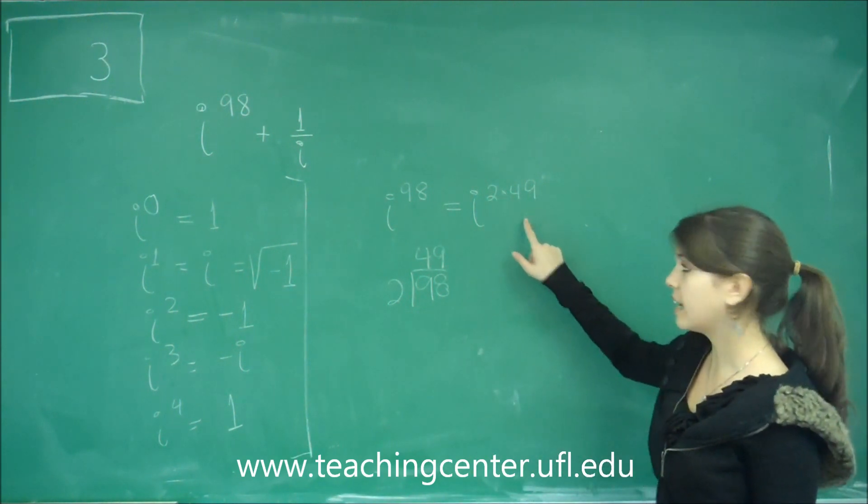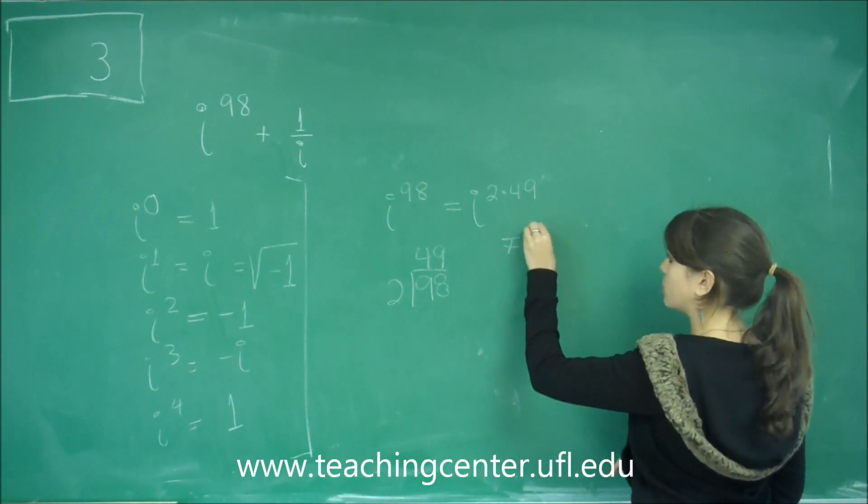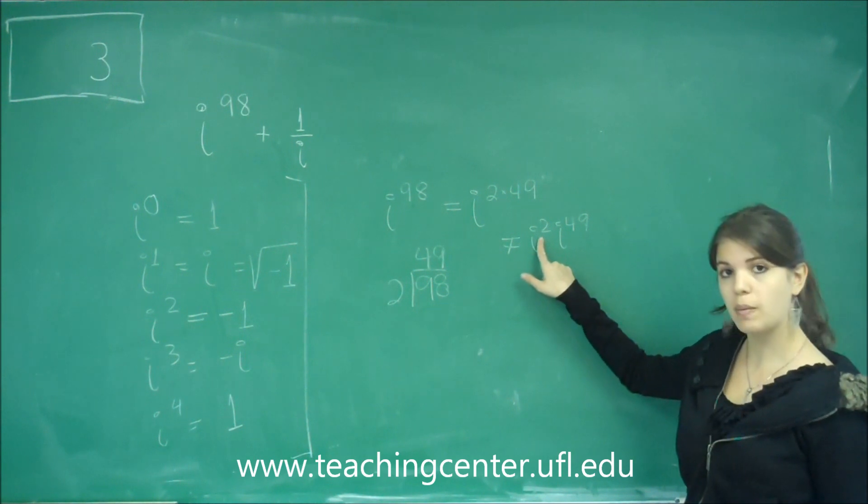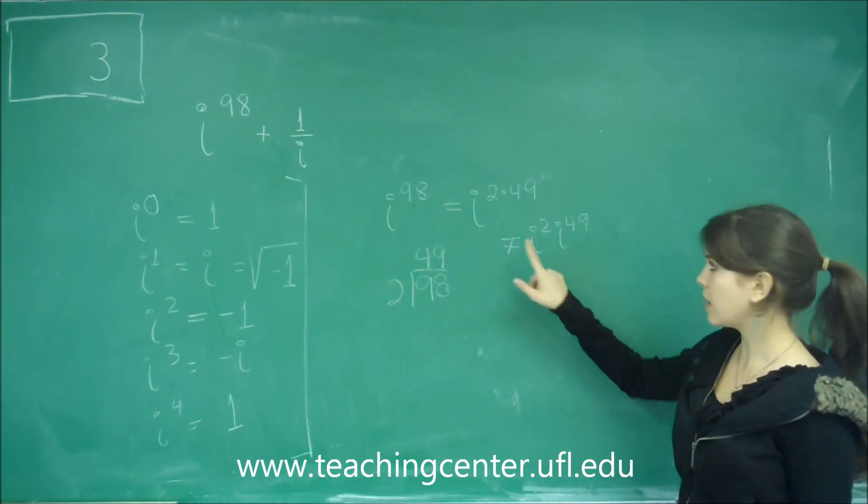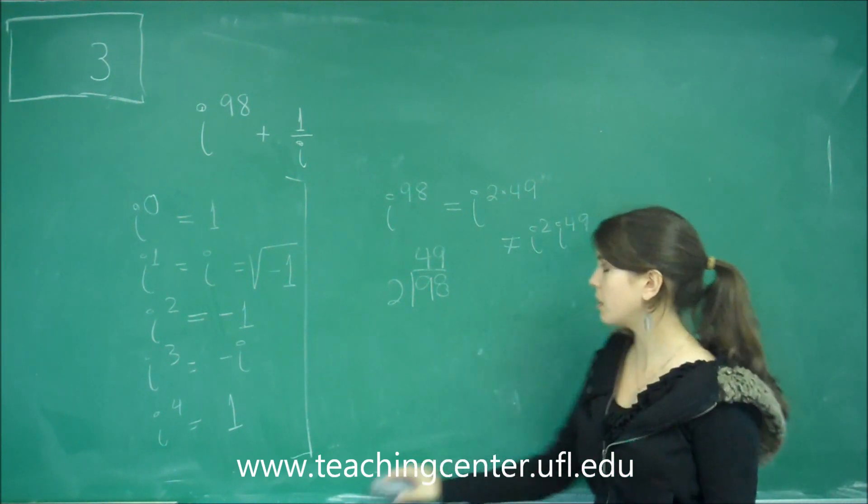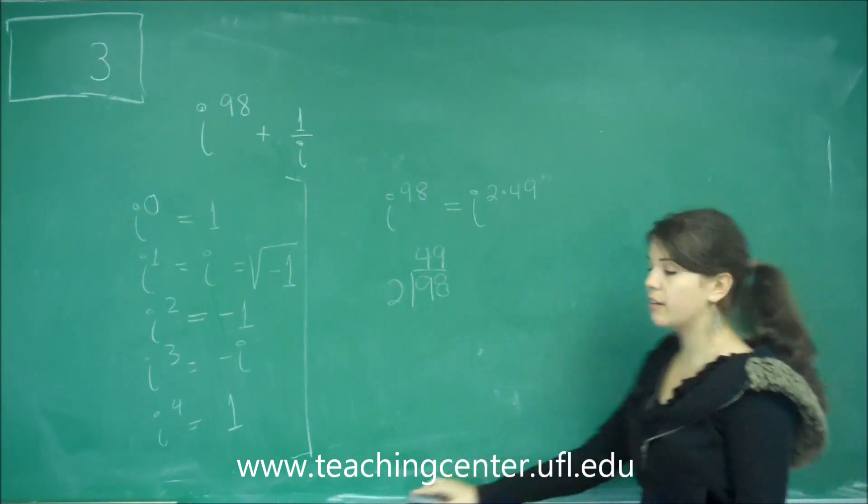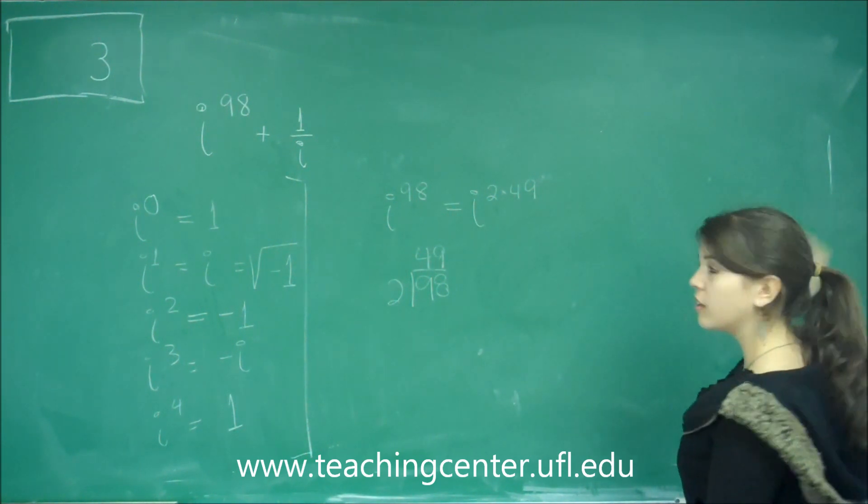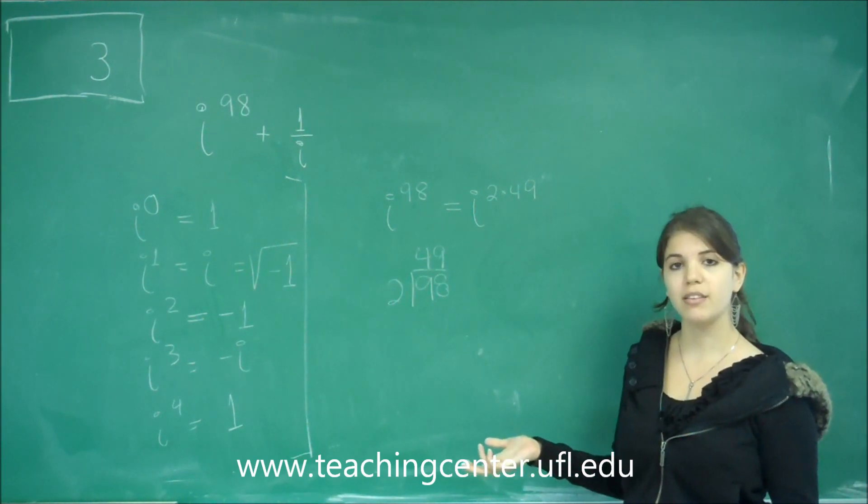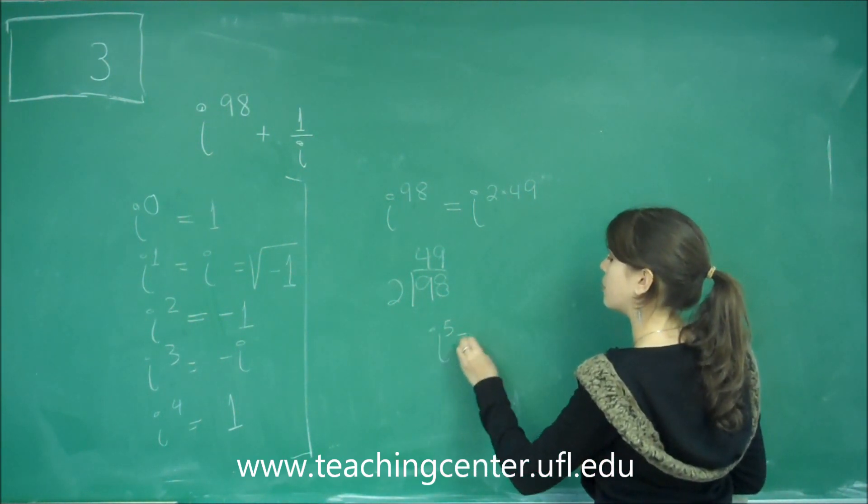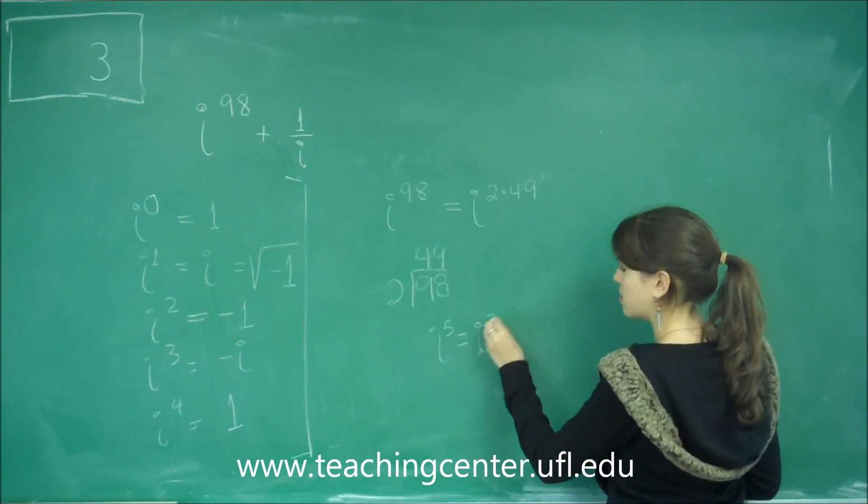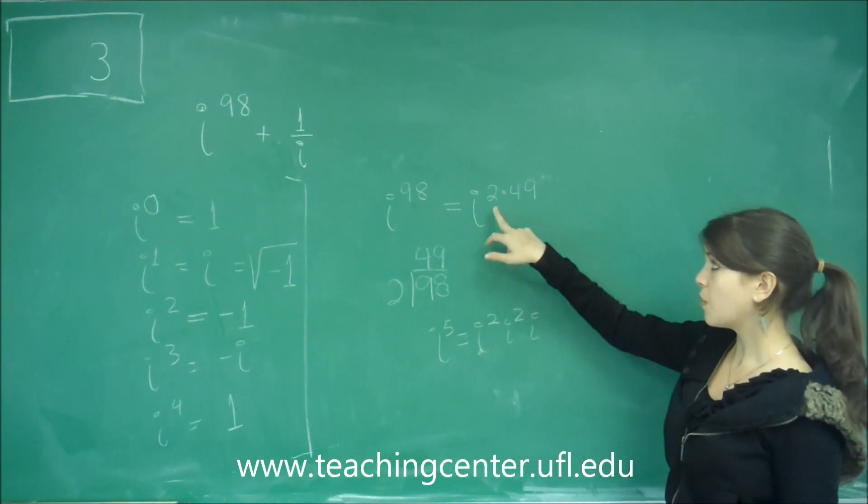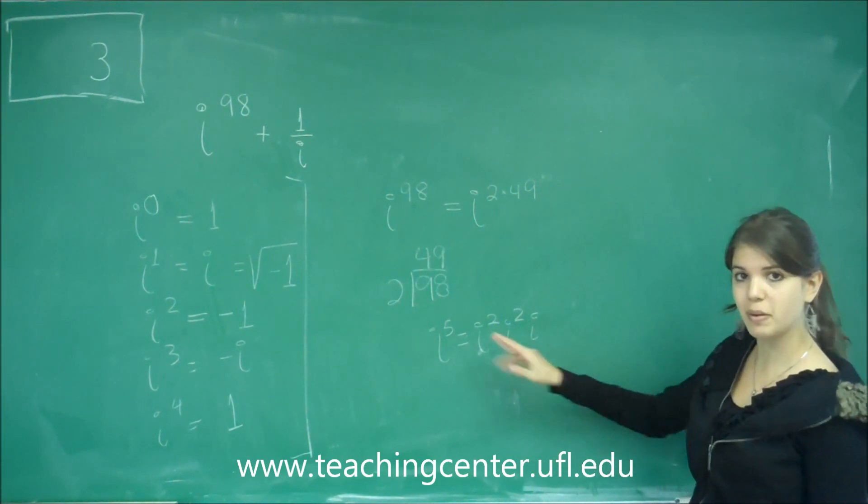So I can rewrite this as i to the 2nd times 49. Notice that I cannot write this to be equal to i squared times i to the 49 because what this is, is I'm adding those two. That would give me i to the 51. But what I can visualize is i to the 2nd being multiplied 49 times. So just like before, for i to the 5th, I multiplied i to the 2nd twice and then times an i. In this case, what I'm going to have is i to the 2nd, not twice, but 49 times.